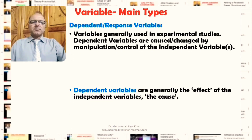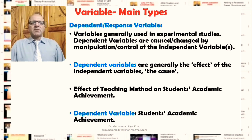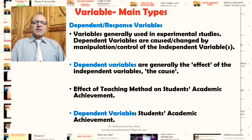The main types of variables also include dependent variables. Dependent variables are used generally in experimental or relational studies. They are deemed to have been caused by or changed by the manipulation or control of the independent variables. We can say these are the outcomes or effects of the changes or manipulation of independent variables — dependent variables are the effect, while independent variables are the cause.